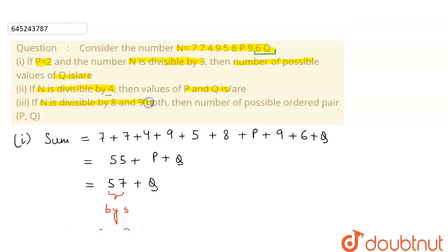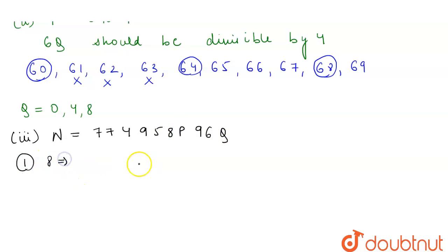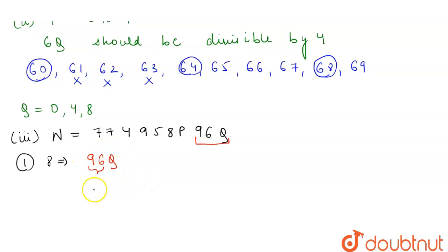The third part asks: if N is divisible by both 8 and 9, how many ordered pairs (p, q) are possible? For divisibility by 8, the last three digits must be divisible by 8, meaning 96q must be divisible by 8. Since 96 is already divisible by 8, q must also be divisible by 8, so q can only be 0 or 8. Since p is not among the last three digits, p can be from 0 to 9.